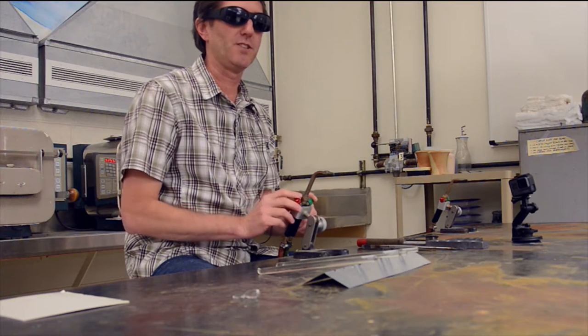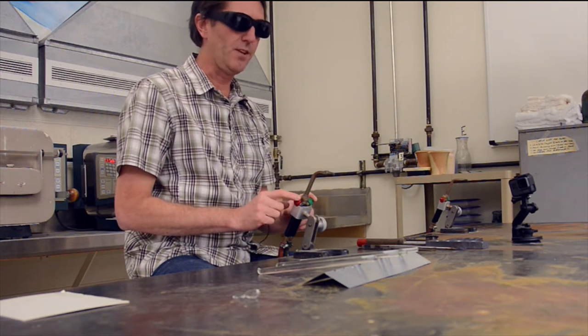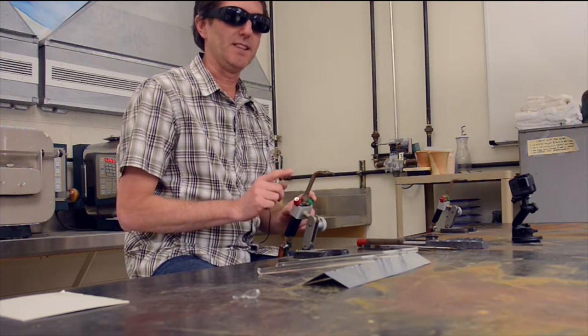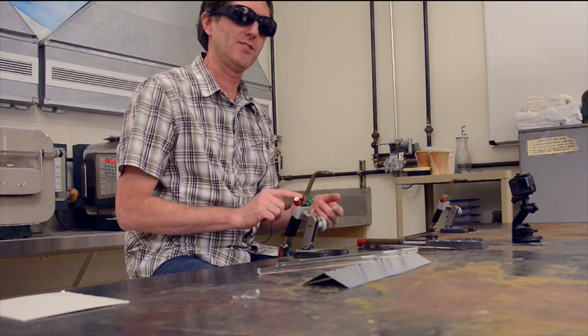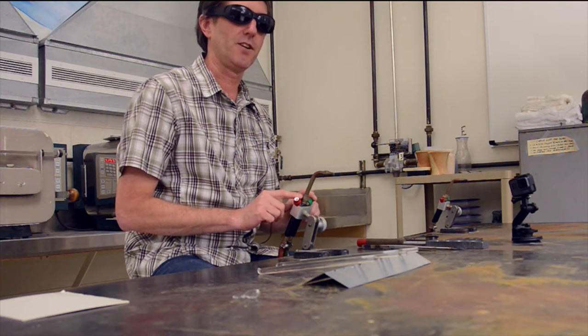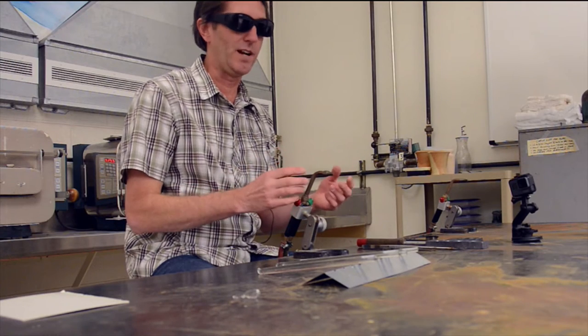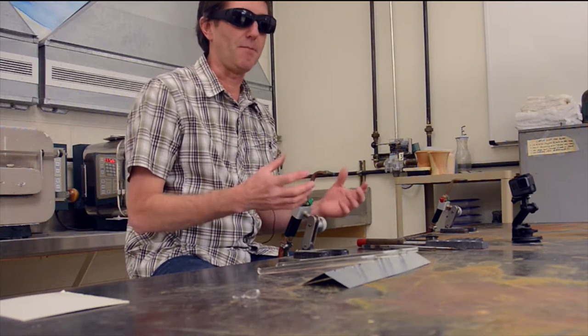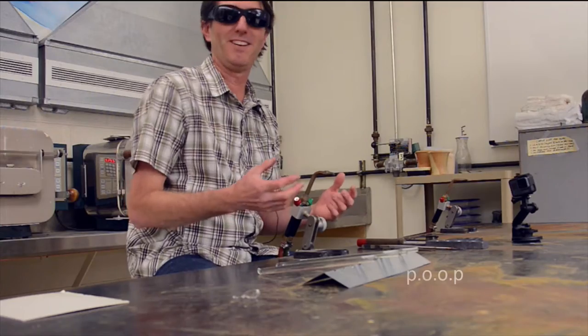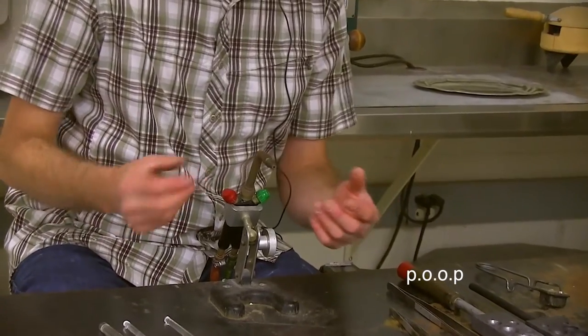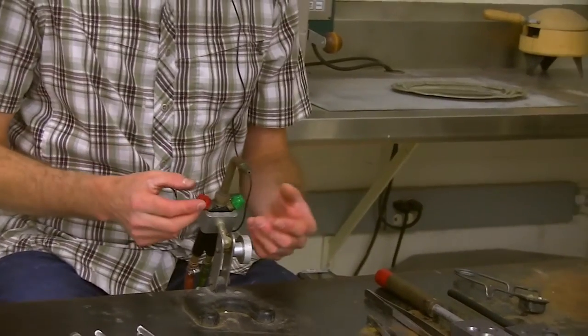One of the rules when we start with gas and working with a torch is that we light the gas and we add oxygen. When we turn it off, we turn off the oxygen and the gas. If we go the other way around, you end up with a POP, the acronym POOP: Propane Oxygen, Oxygen Propane to help you remember that.